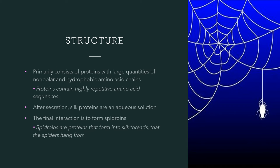Structure: The primary structure of spider silk primarily consists of proteins with large quantities of nonpolar and hydrophobic amino acid chains. In comparison to cellular enzymes, silk proteins exhibit aberrant amino acid composition. The proteins contain highly repetitive amino acid sequences in their large domains, showing a specific hydrophobicity pattern with alternating hydrophilic and hydrophobic blocks. Such composition is a crucial phase for separation during the spider's spinning process. After secretion from the silk glands, silk proteins are in an aqueous solution.